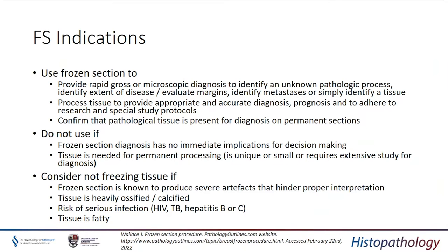It can be used in place of permanent processing, but this depends very much on the infrastructure. I would not advocate a frozen section if there's no immediate implication for decision making, or if the tissue is for permanent processing, i.e. it's a unique or small piece of tissue where formalin-fixed paraffin-embedded material will give a more robust diagnostic answer. I would consider not doing a frozen section if it's going to produce severe artefacts that will hinder interpretation, if it's heavily calcified or ossified material, or if there's a serious risk of infection covering HIV, TB, hepatitis, and COVID.